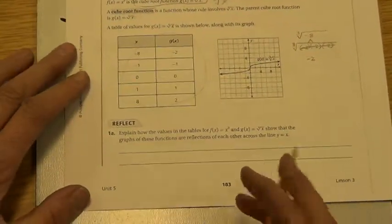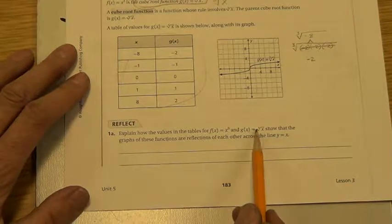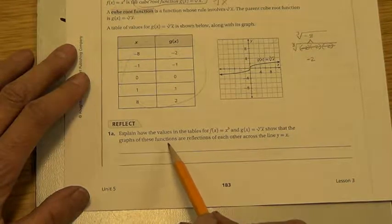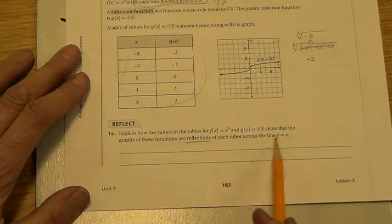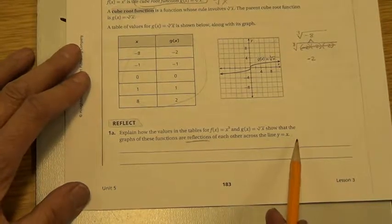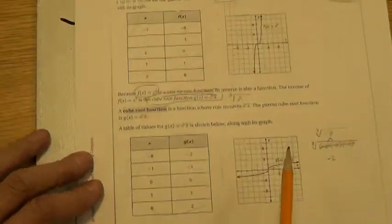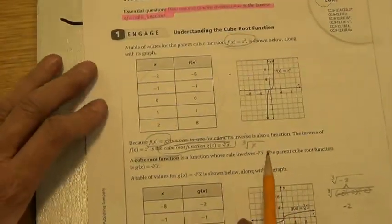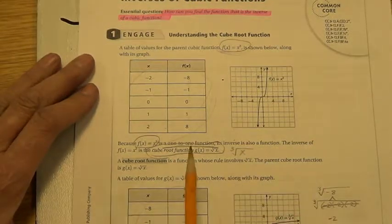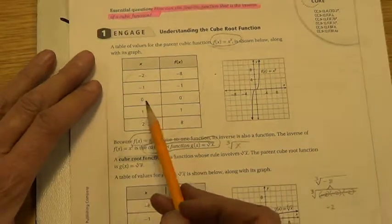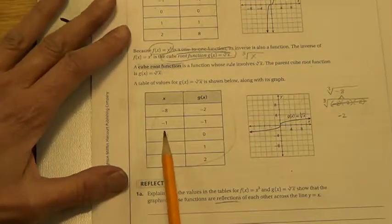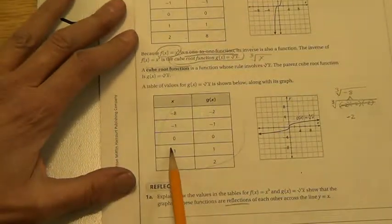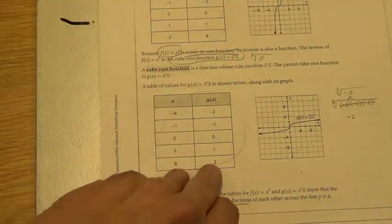Explain how the values of the tables in x cubed and cube root of x show that the graphs of these functions are reflections of each other across the y equals x line. Well, if they are reflections of each other across the y equals x line, we call them inverses. And if they are inverses, from our square root 5-2 lesson, if you haven't had it yet, you should go there first. We found that the inverse is the input and the output were reversed. So the output from the first becomes the input of the next.